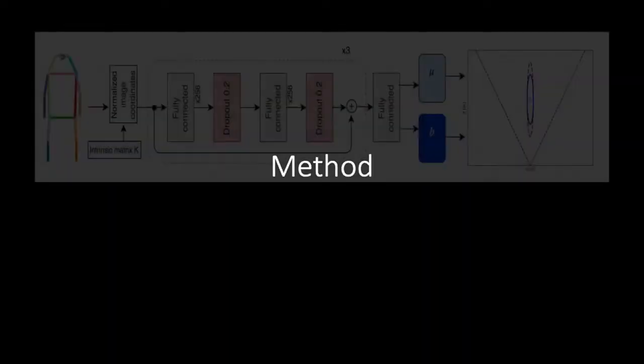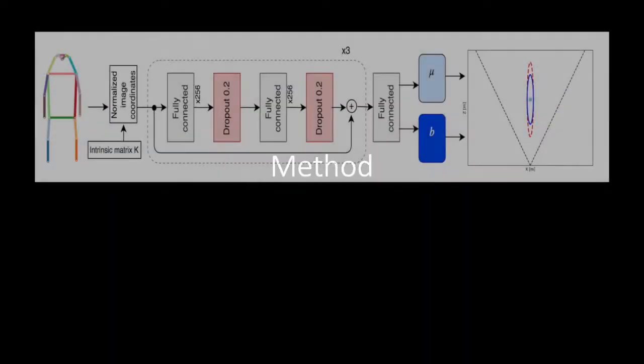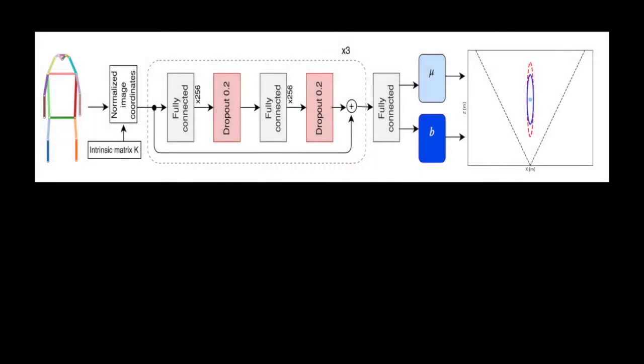Our method is a simple feed-forward neural network that receives as inputs 2D joint coordinates and outputs 3D location and uncertainty for each pedestrian. The predicted confidence intervals are the combination of two kinds of uncertainty: aleatoric and epistemic.